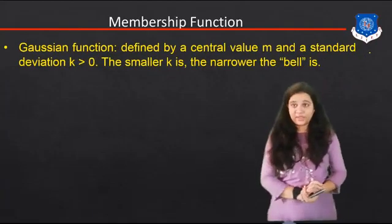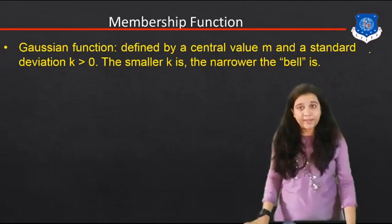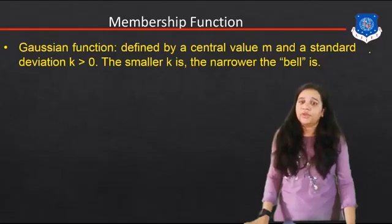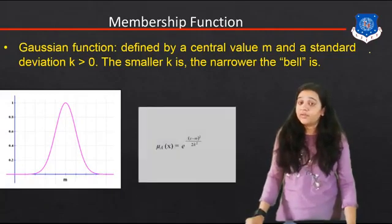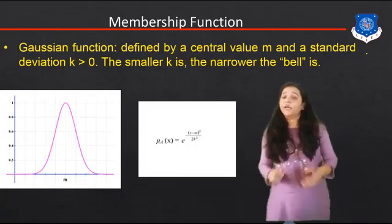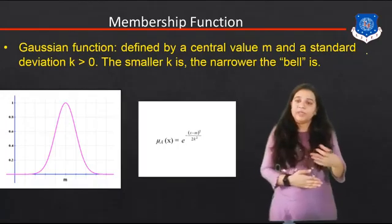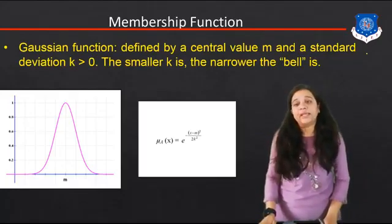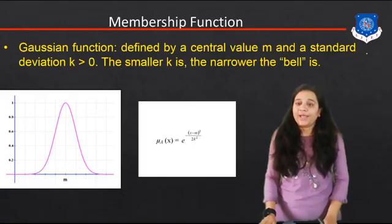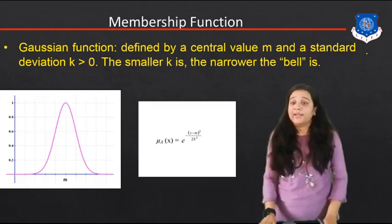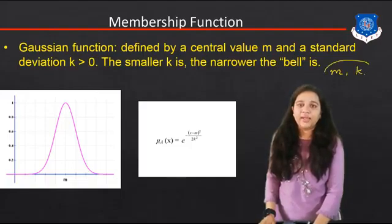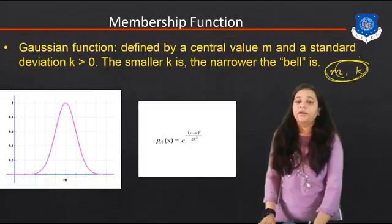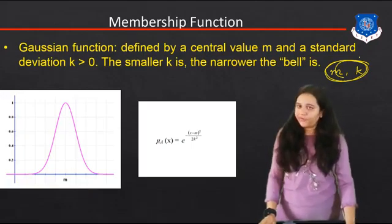The next membership function is the Gaussian function. It is defined by a central value M and a standard deviation K, where K > 0. The smaller K is, the narrower the bell shape is. Unlike the triangle or trapezoid, you cannot define a strict upper or lower limit. The equation is: μ_A(x) = e^(−(x − M)² / (2K²)). The Gaussian function depends on the values of M and K — by changing K, we get different membership functions.